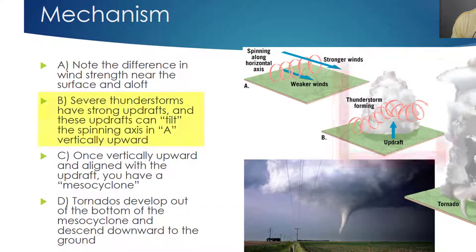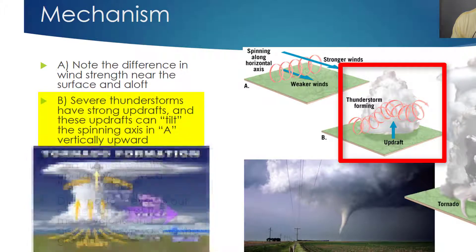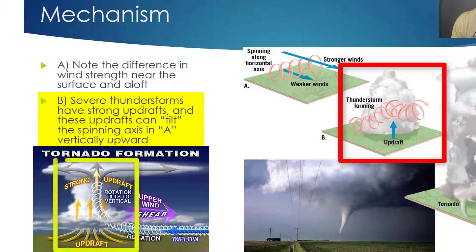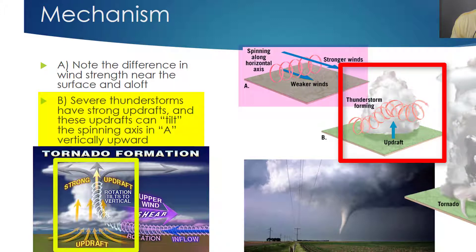Now let's shift our attention to part B, because what we see occurring here are the very strong violent updrafts that can produce severe thunderstorms. Keep in mind that updrafts are warm moist air that's rising rapidly, and this rising air is what serves as the fuel for thunderstorm development. These really violent updrafts can take that rolling motion shown in part A — the spinning along a horizontal axis caused by wind shear — and tilt it more vertically.